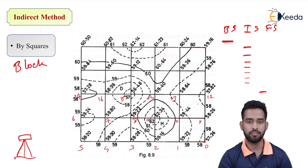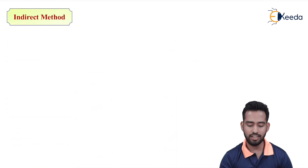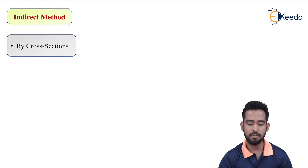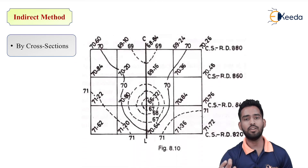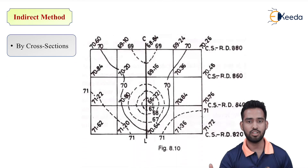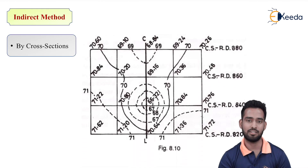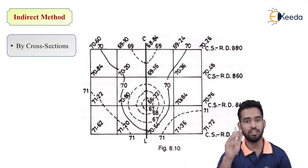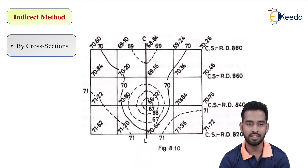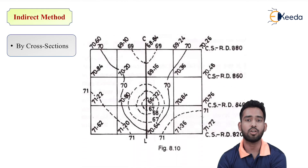This square method is also known as block contouring. These are known as indirect methods because we are taking out readings on the ground and then doing calculations in the classroom or laboratory, then plotting the sheet. That is why these are called indirect methods. In the direct method, we are drawing the contours on the ground itself.